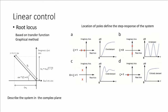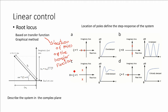The root locus method is based on the transfer function. It is a graphical method where we draw the location of the poles of the system in the complex plane. Those poles of the system are the roots of the denominator in the transfer function. Equivalently, those poles are also the eigenvalues of the matrix A, as we saw in the previous lecture. So, depending on the position of the poles in the complex plane, we can have different options that are depicted in the figure on the right.